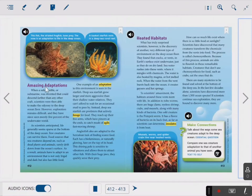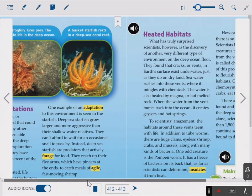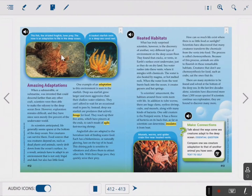Amazing Adaptation. So before we read that, let's go and look at the caption. It says the fish, the striated frogfish, I believe that's how you say that, lures prey. The nose is an adaptation to life in the deep ocean. A basket starfish rests in a deep sea coral reef. So that's a basket starfish. Amazing adaptations.